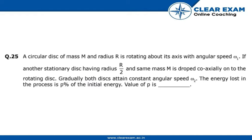Hello everyone, welcome back. Let's see our next question. The question states that a circular disk of mass M and radius R is rotating about its axis with angular speed omega 1.